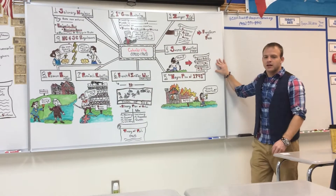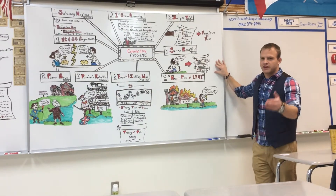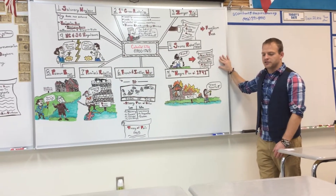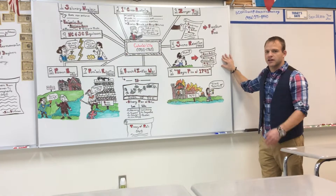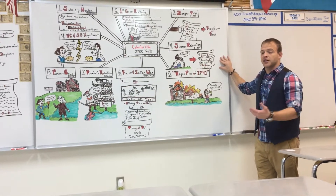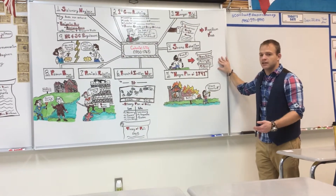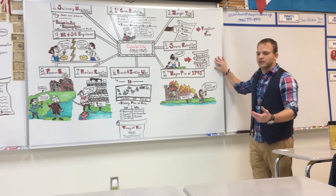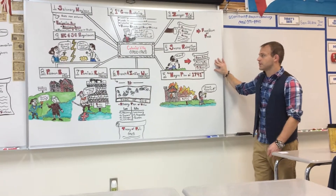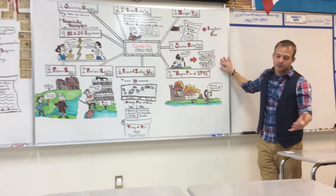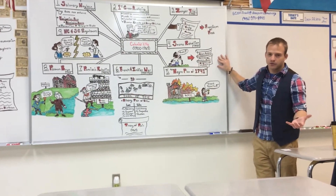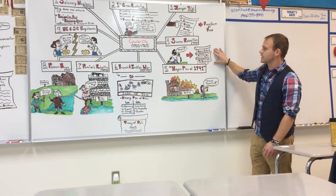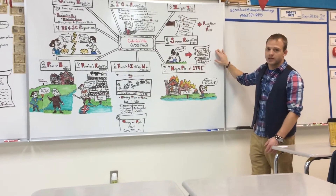In terms of the Stono Rebellion, a slave named Jimmy from Angola rallies a bunch of slaves together in South Carolina. They're trying to get to Florida, run by the Spanish, and trying to get their freedom. Ultimately they are caught, as most slave rebellions tend to end very badly.